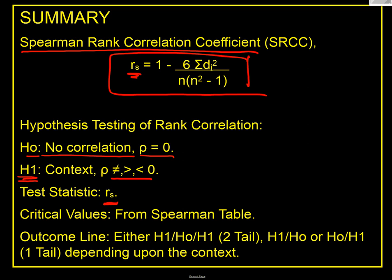And we're comparing our r value as our test statistic with the critical values from the Spearman table. And our outcome line could either be H1/Ho/H1 for a two-tail test, or H1/Ho or Ho/H1 for a one-tail test, depending on the context. So I hope that's of use to you.